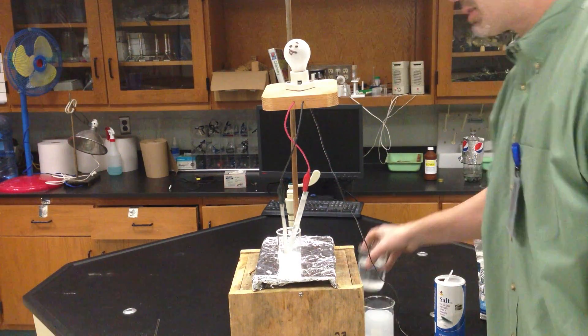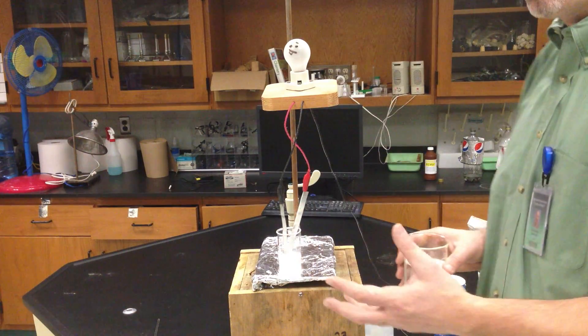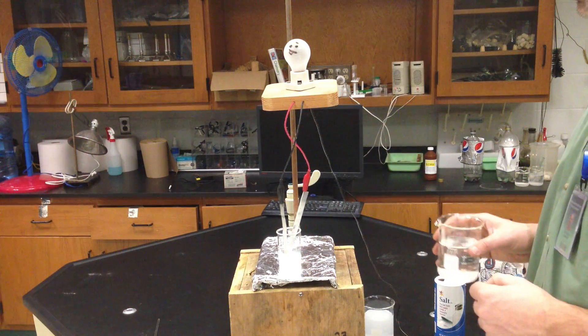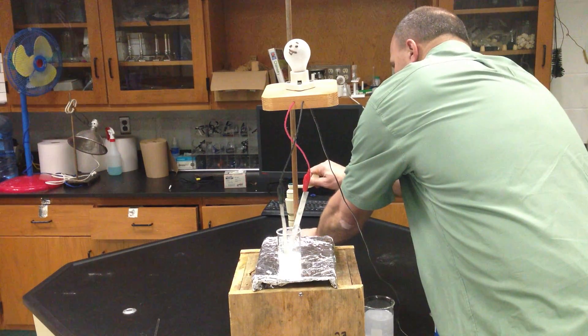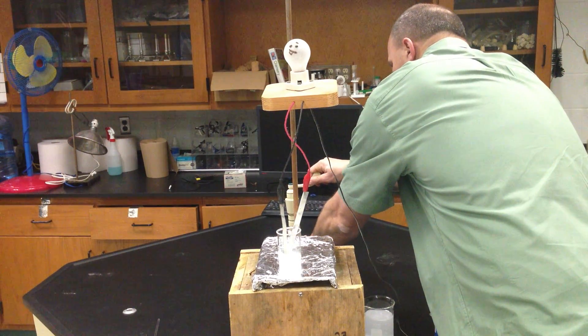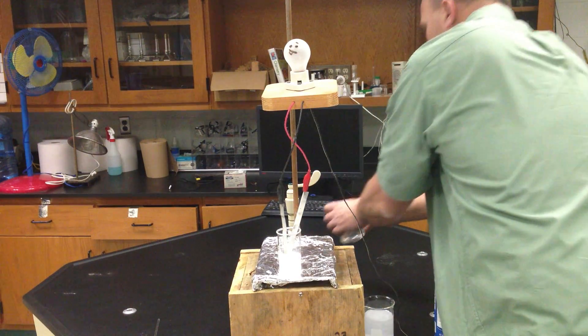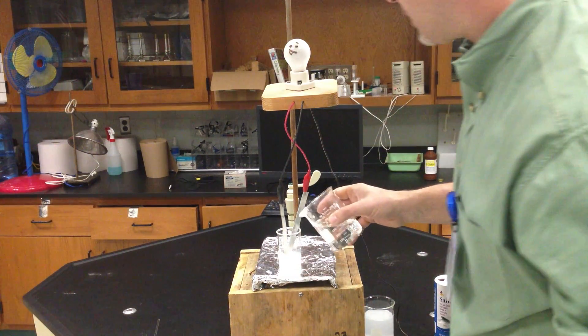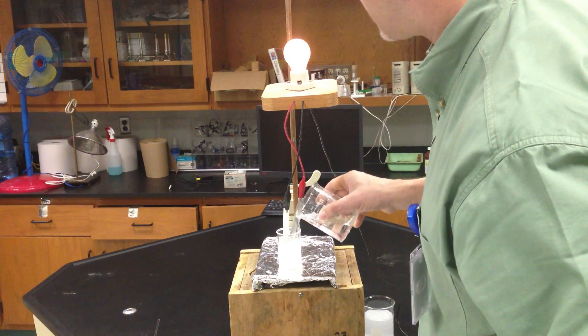And the reason behind that is because the ions are locked in a crystal. The ions cannot move when they're locked in that crystal. So if I was to add just some water to this system, hopefully I dissolve some ions. And by dissolving some ions, I should get my light bulb to light up.